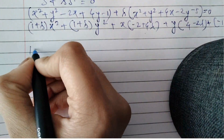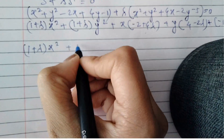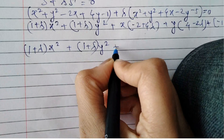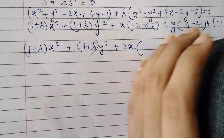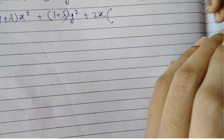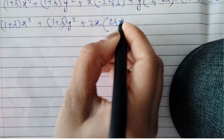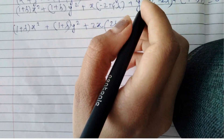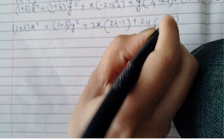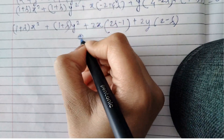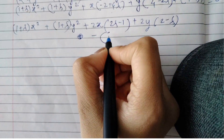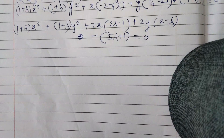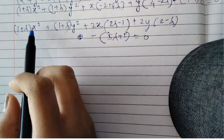Now taking 2 as common from the brackets, we get: (1 + lambda)x² + (1 + lambda)y² + 2x(2lambda − 1) + 2y(2 − lambda) − (5lambda + 1) = 0.